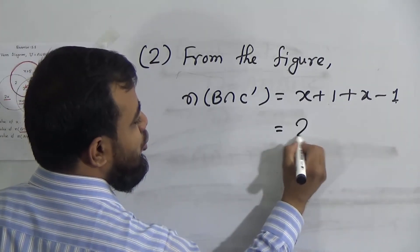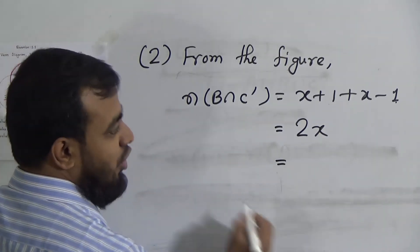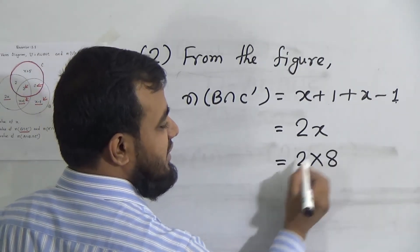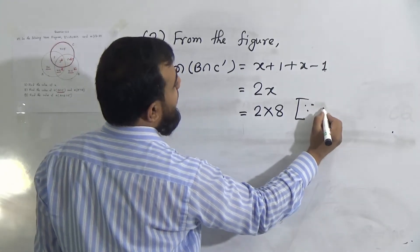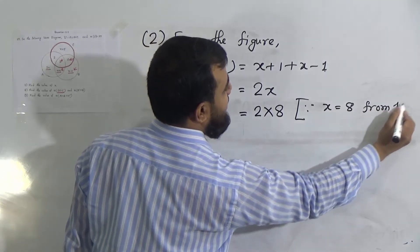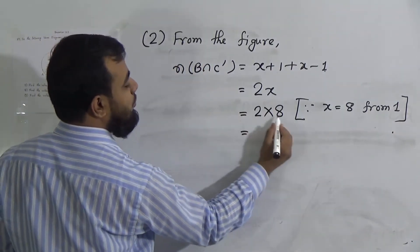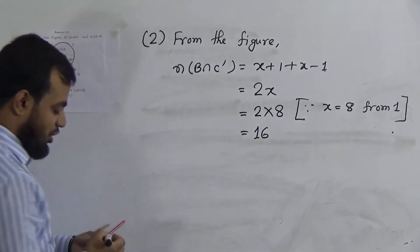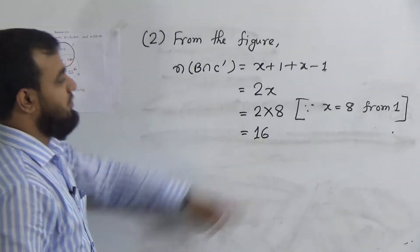We know x = 8 from Activity 1. So 2x = 2 × 8 = 16. Therefore, the number of elements of B intersection C complement equals 16.